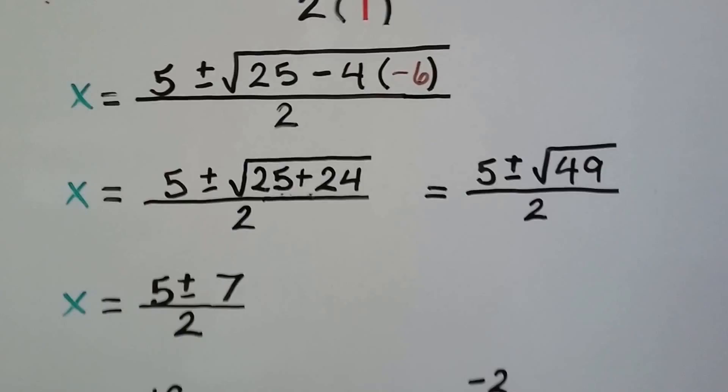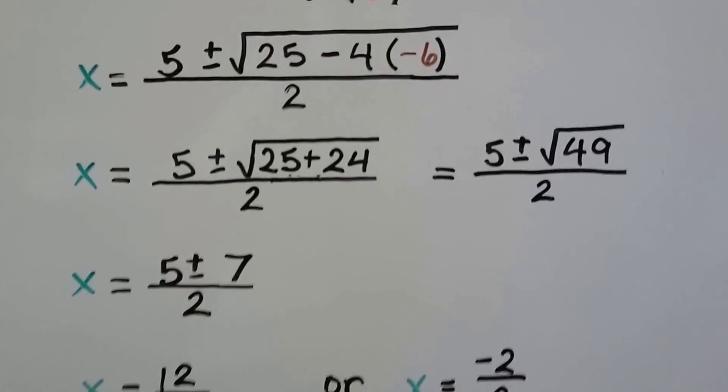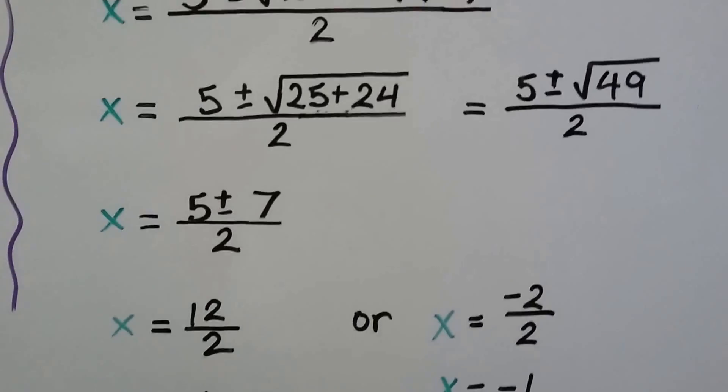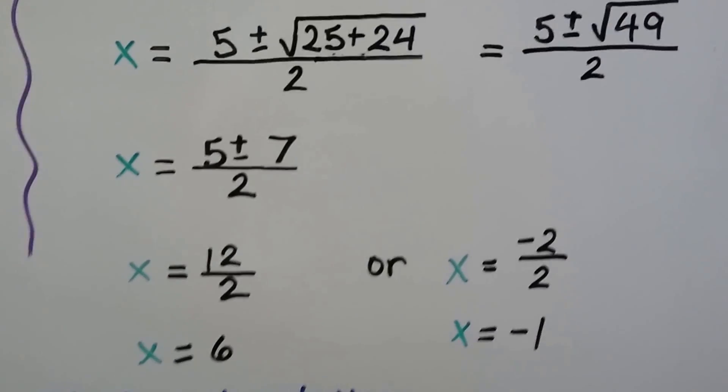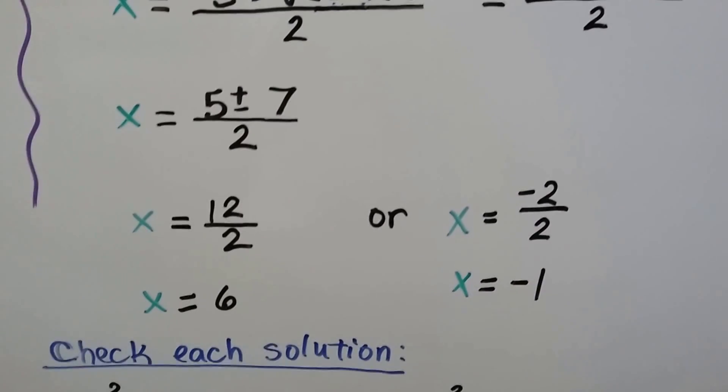Remember, the term takes the sign with it. That means we've got 5 ± √49 divided by 2. The square root of 49 is 7, which means we have 5 ± 7 divided by 2. Which means if we do the plus, it's 12 divided by 2.